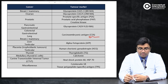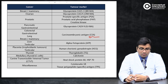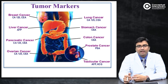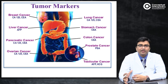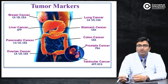Prostate-specific antigen (PSA) may be elevated in prostate malignancy. These are the broad tumor markers overview. You must be aware of at least five or six key tumor markers, specifically CEA, CA 19.9, CA 15.3, alpha-fetoprotein, and PSA, as these are commonly asked in exams.